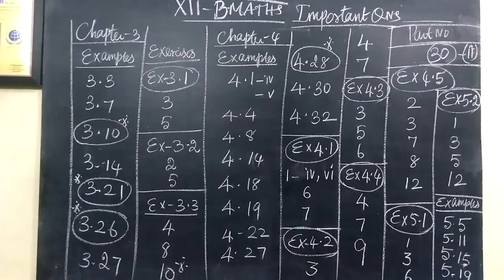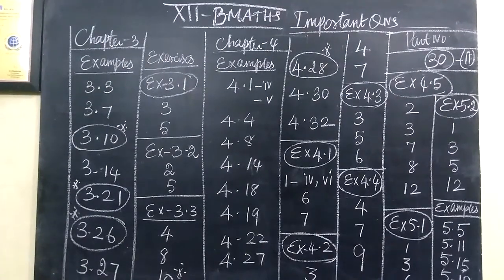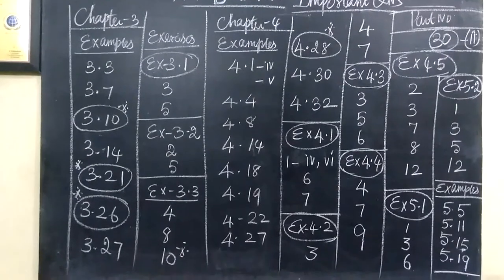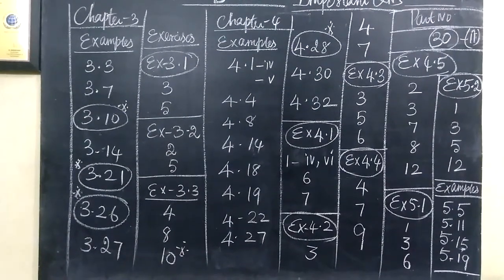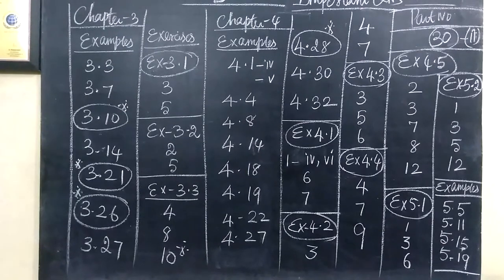Chapter 3 is given examples 3.3, then 3.7, 3.10 is a little more important, then 3.14, 3.21 more important, 3.26, then 3.27.